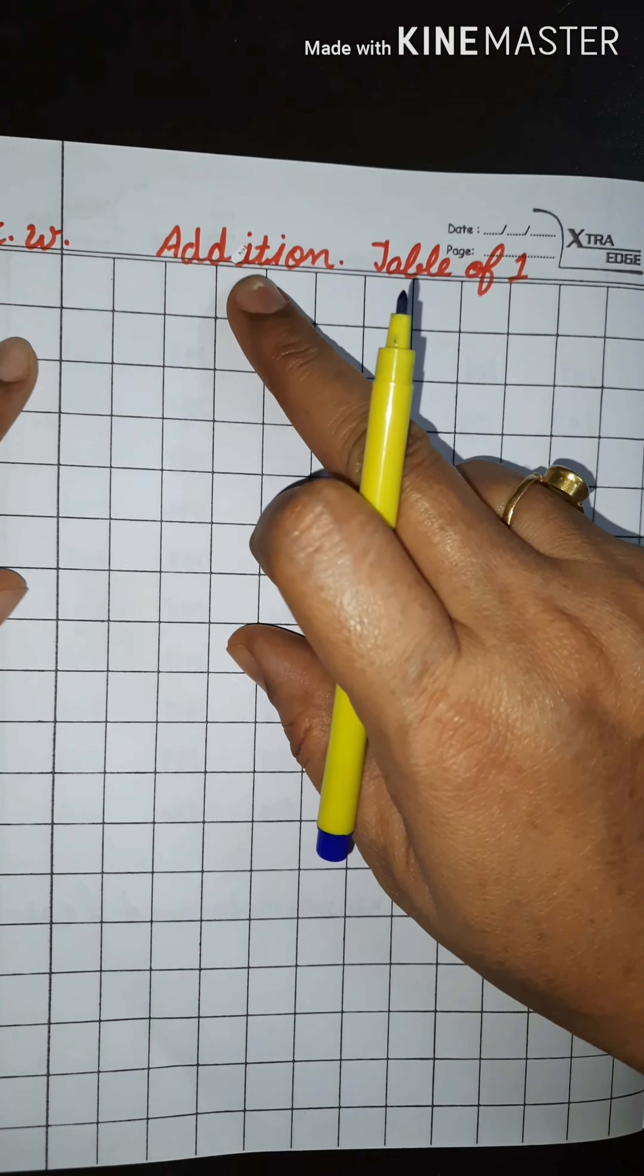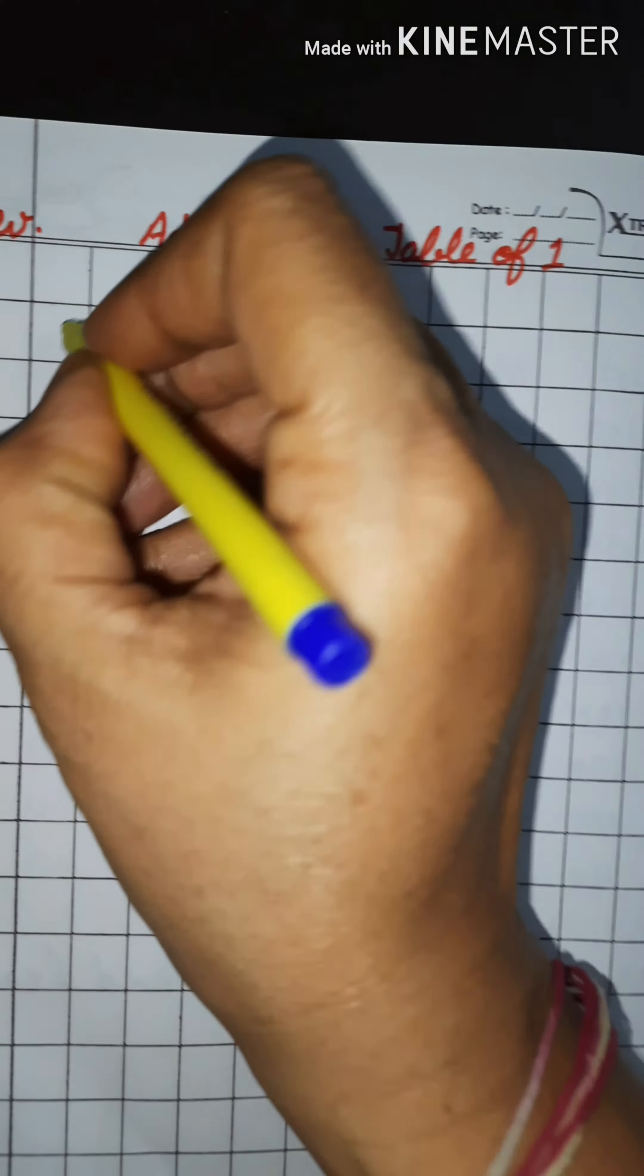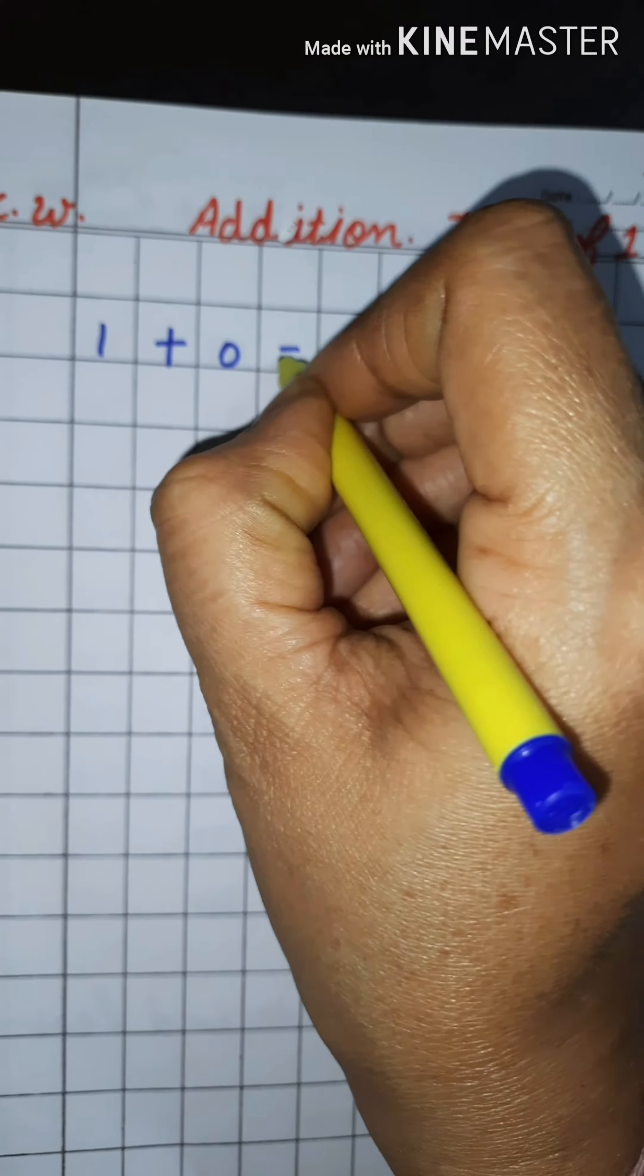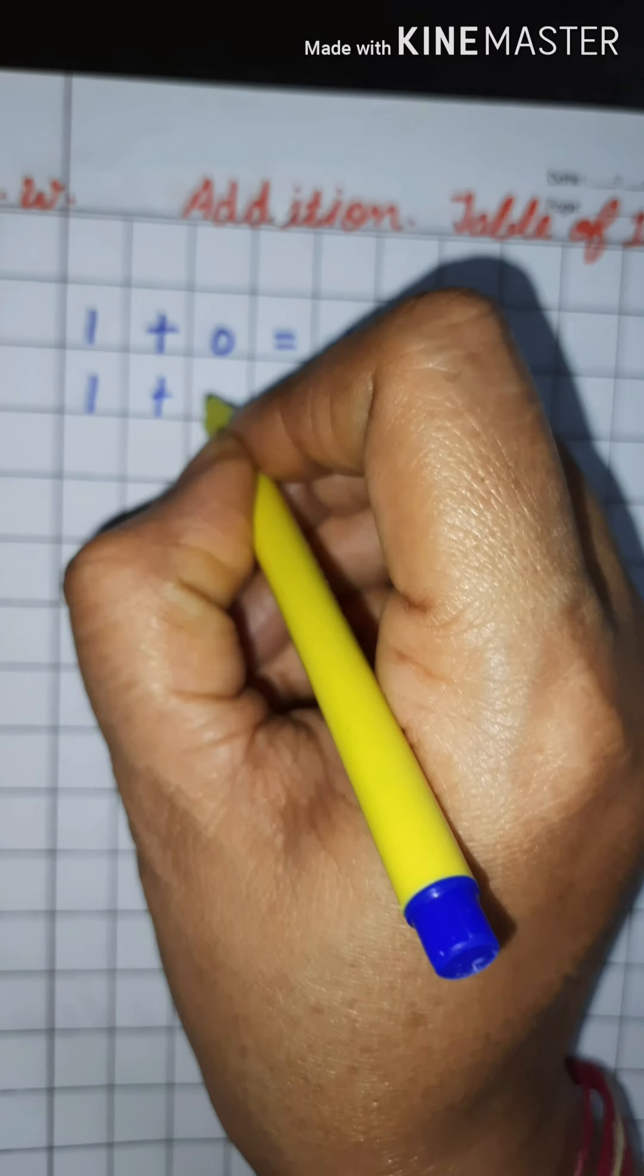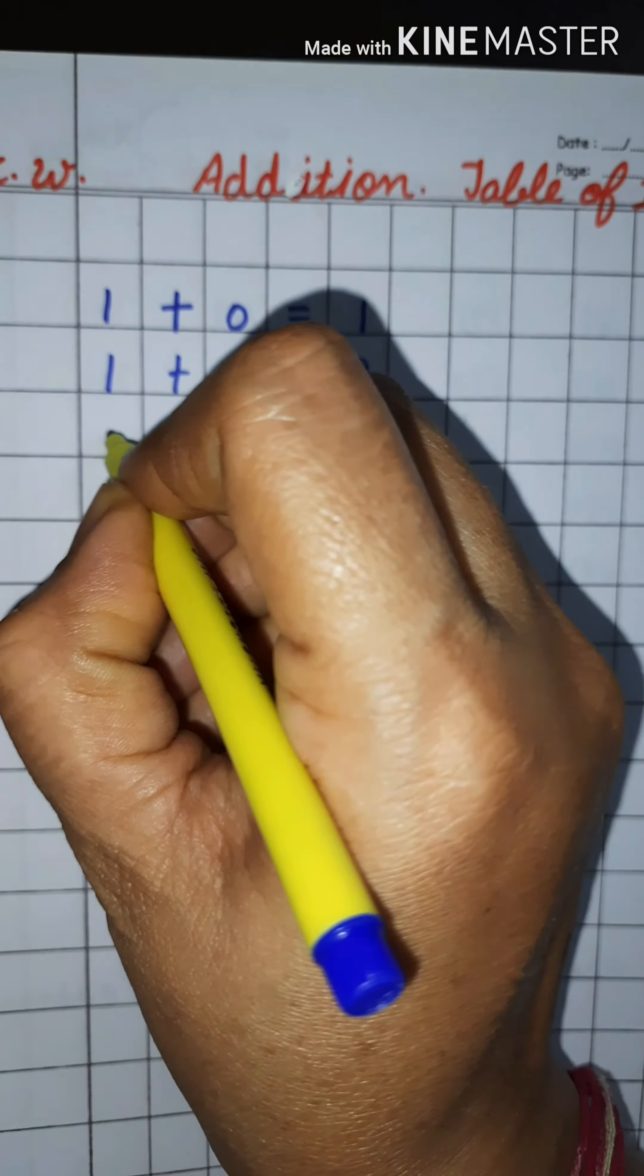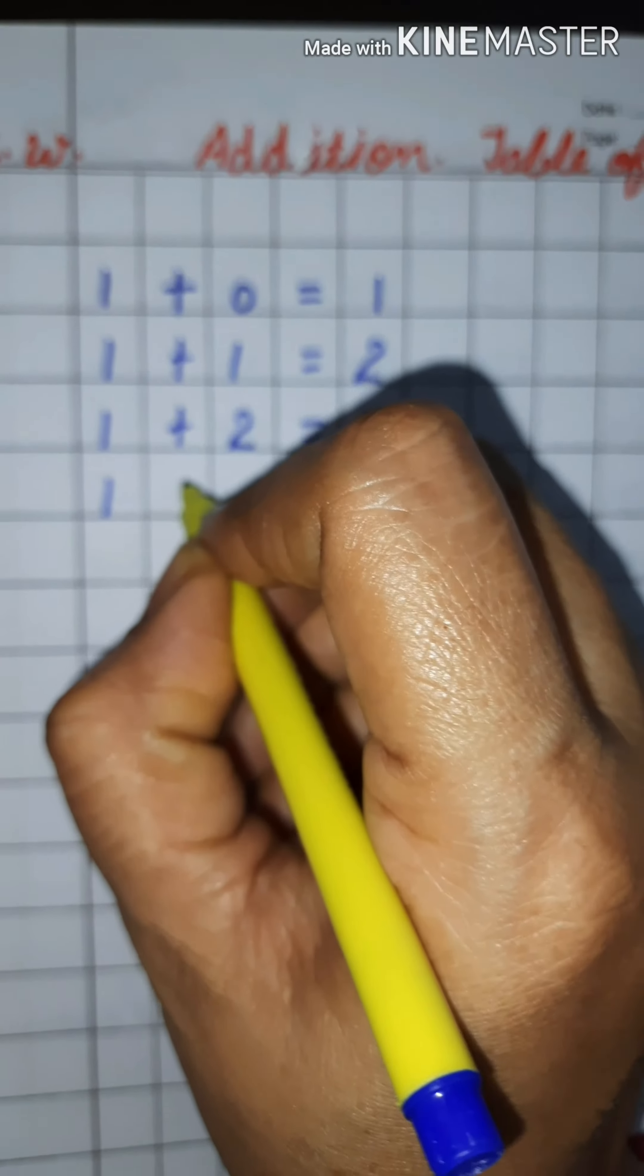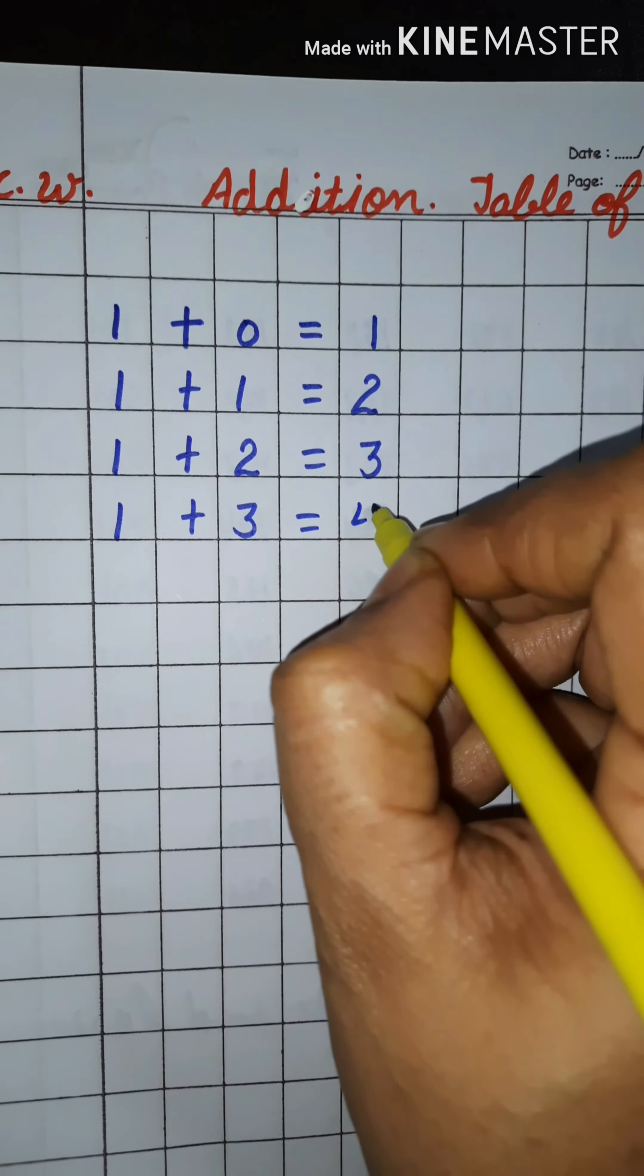Addition - A-D-D-I-T-I-O-N. Addition table of one. One plus zero is equal to one. One plus one is equal to two. One plus two is equal to three. One plus three is equal to four.